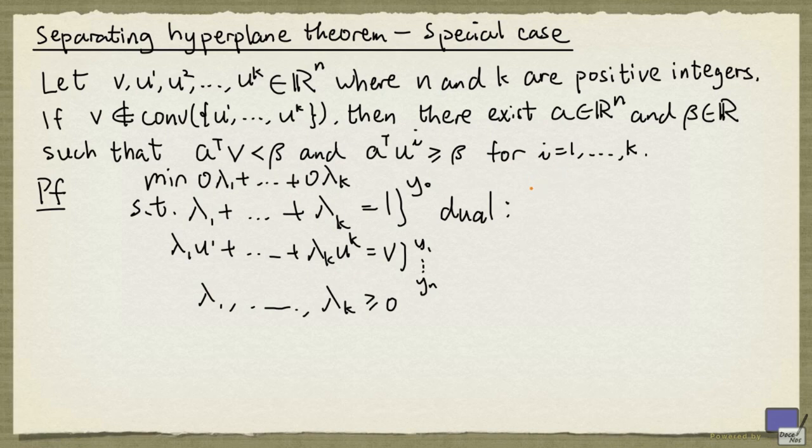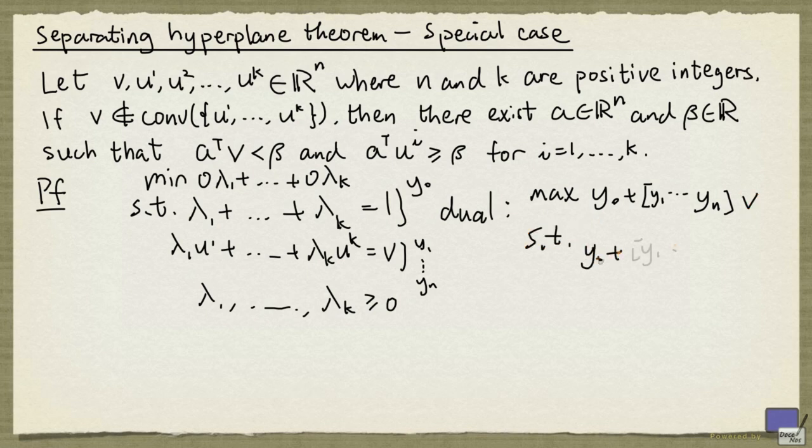So the objective function is going to be maximize y0 plus the matrix consisting of one row with the entries y1 up to yn times v, subject to y0 plus the one row matrix y1 up to yn times ui less than or equal to 0 for i from 1 up to k.